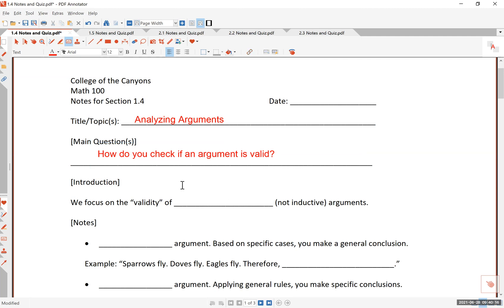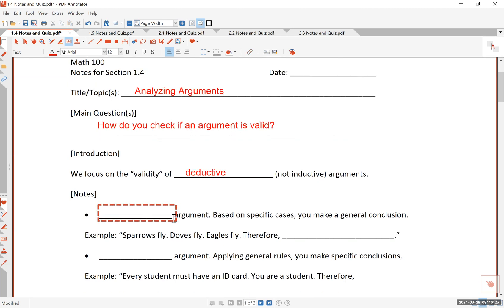We focus on the validity of what we call deductive arguments, not inductive. Now, what's the difference? Here is the difference. Let me just explain. I will write down this word inductive, but I should also mention here that there are two general or basic types of arguments, and they're called inductive and deductive. First, inductive argument. An inductive argument is one based on specific cases, and based on specific cases that you bring, you make a general conclusion.